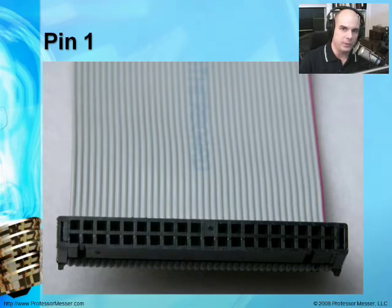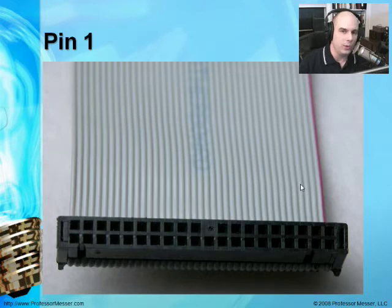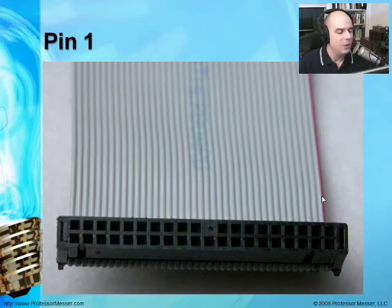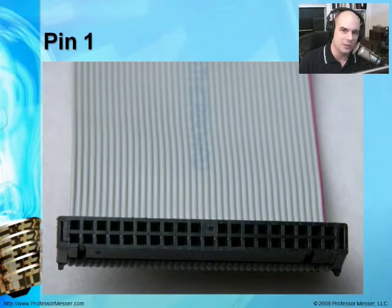Another convention is making sure that pin 1 plugs into pin 1. Every single connector has numbered pins, so you want to plug them in the same way. This ribbon cable connector looks almost exactly the same on either side — how would you know which side is pin 1? On ribbon cables, there's a red color that extends along one side, and that tells you where pin 1 is. On the motherboard or device you're plugging into, it'll usually have a '1' written on that end of the connection, so you know exactly where that colored cable is supposed to plug in.